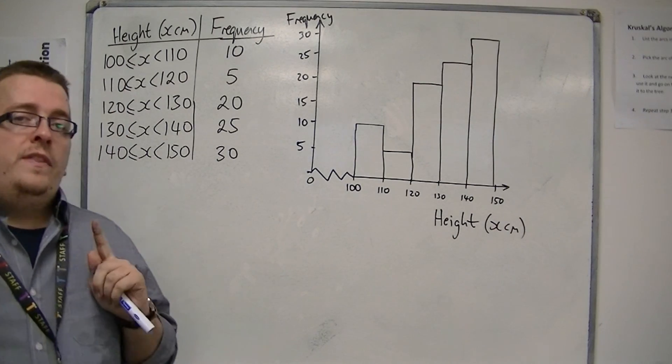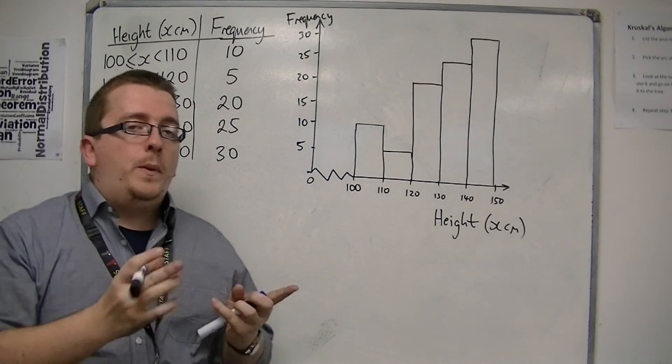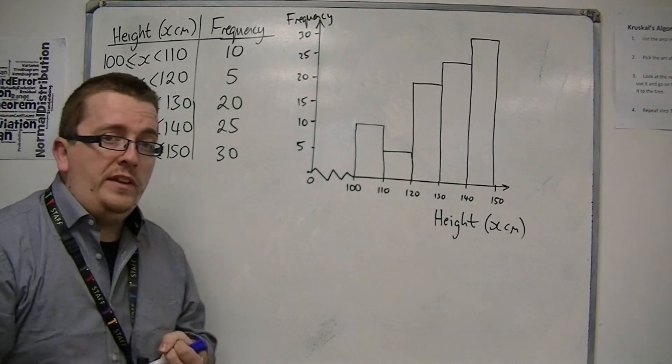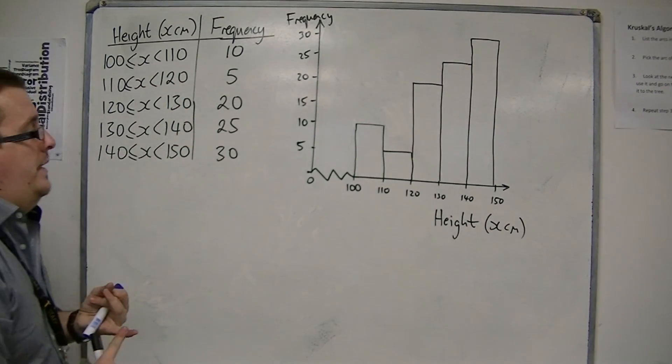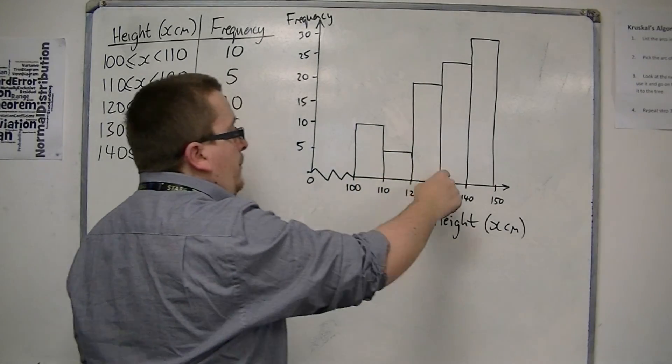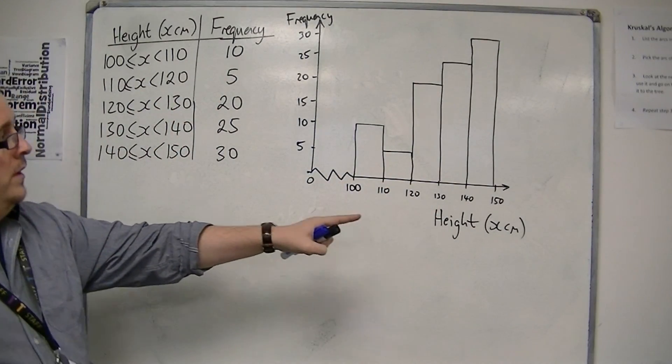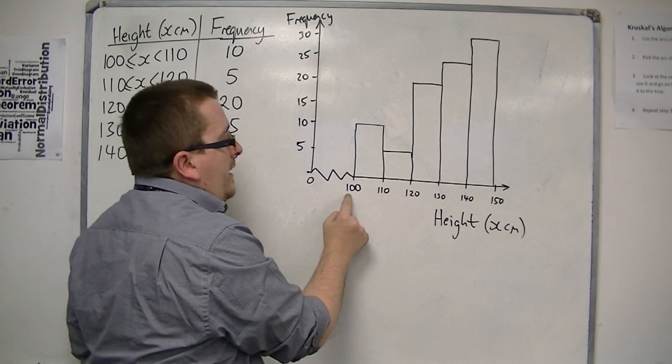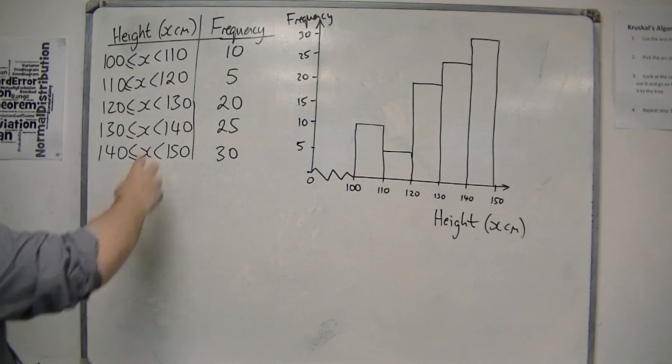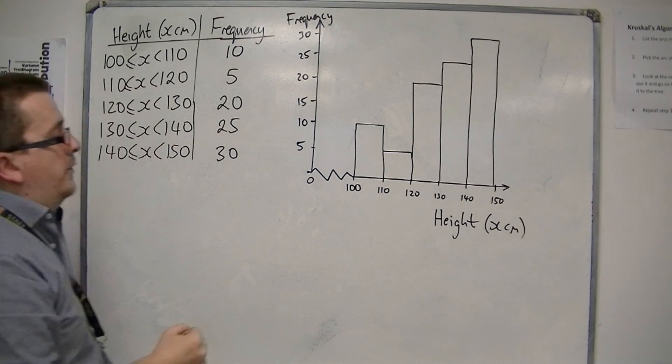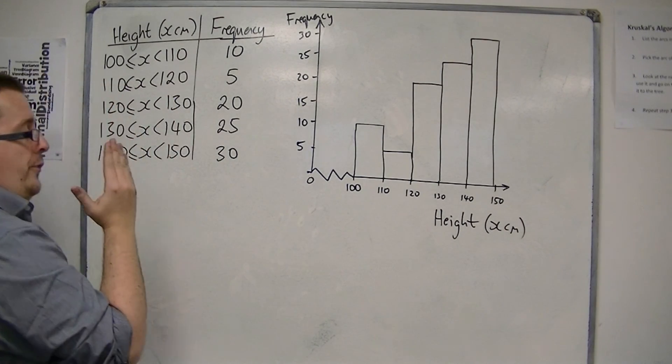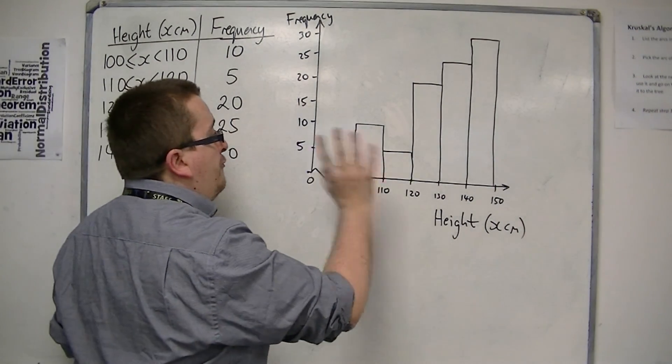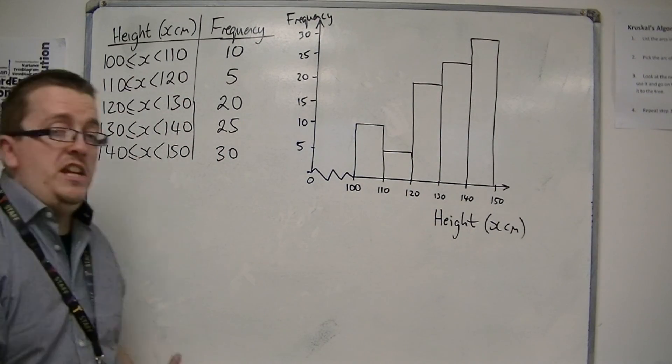There is a difference between the bar chart that we learned how to draw earlier and this frequency diagram. The difference is that there are no gaps between my bars. That means that with no gaps, I am looking at continuous data. We use bar charts with gaps for discrete data, but we can use a frequency diagram like this when we're considering continuous data.